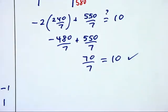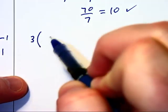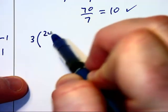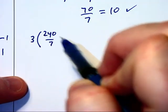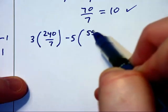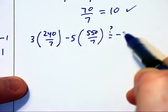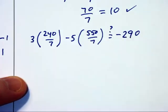So it does work in the first equation. Let's check it in the second equation, 3x, that becomes 3 times 240 over 7, minus 5 times 550 over 7, question mark, is that equal to negative 290?